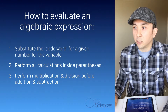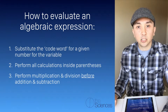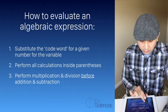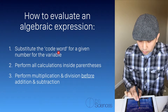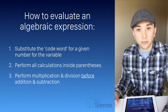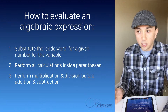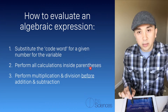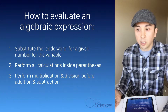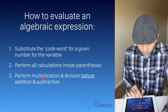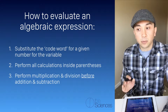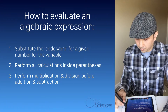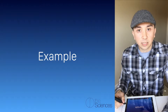So now we want to know how do we evaluate an algebraic expression. Well, the first thing we do is substitute the code word, a given number, for the variable. Then we perform all calculations inside the parentheses. Then we multiply and divide before we do any addition or subtraction. Let's do an example.